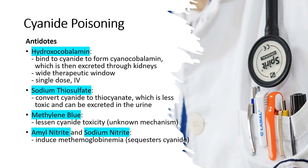Hydroxycobalamin is a commonly used antidote for cyanide poisoning. It works by binding to cyanide to form cyanocobalamin, which is then excreted through the kidneys. Hydroxycobalamin has a high affinity for cyanide and rapidly scavenges free cyanide molecules in the body. It has the advantage of a wide therapeutic window and can be administered intravenously as a single dose.